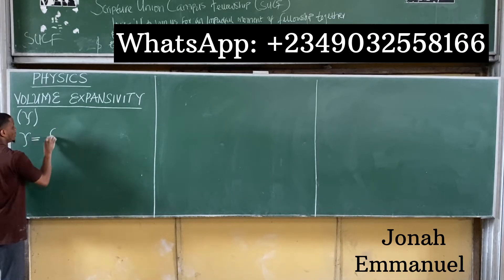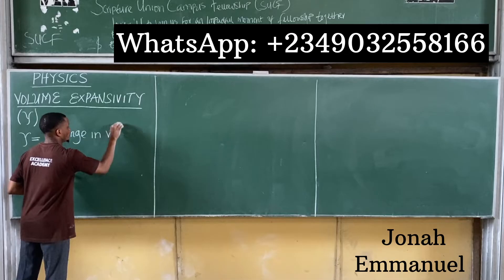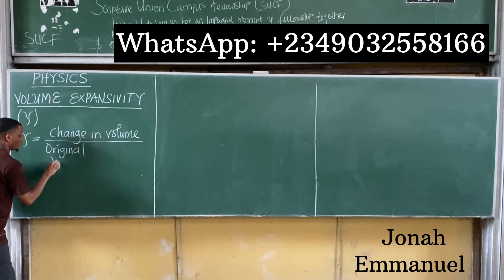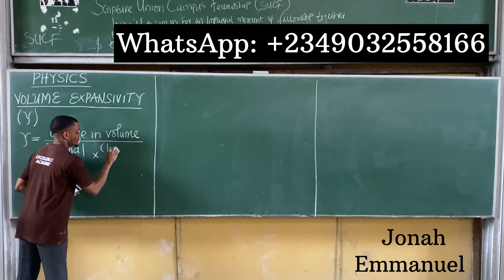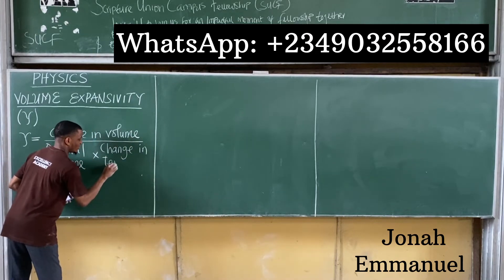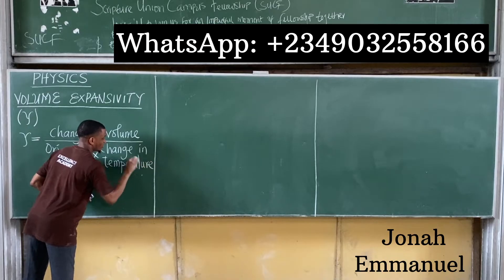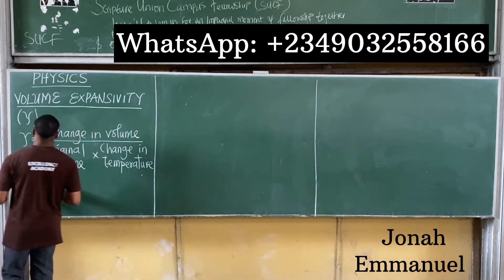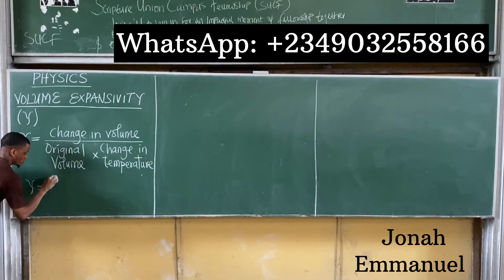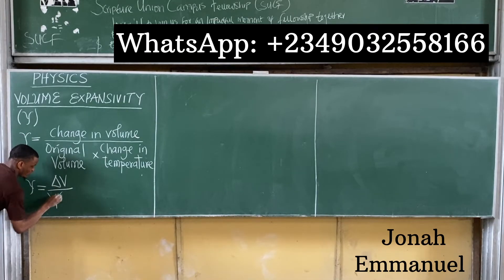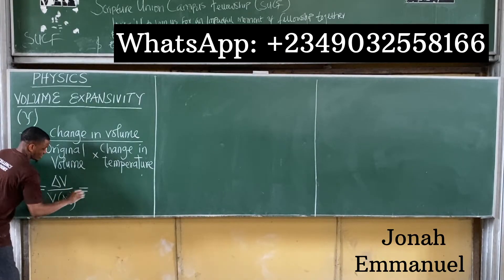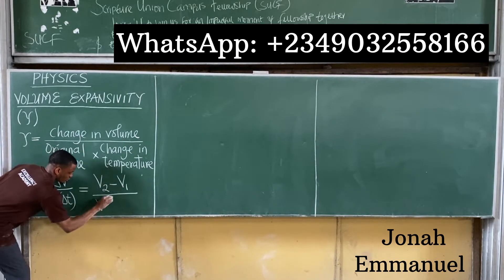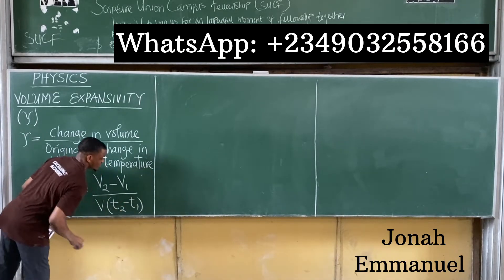The mathematical expression for volume expansivity is the change in volume divided by the original volume, all over the change in temperature. So volume expansivity γ equals ΔV divided by V1 times ΔT, which expands to (V2 − V1) divided by V1 times (T2 − T1).